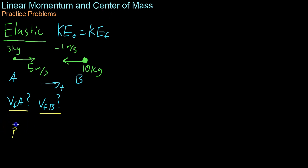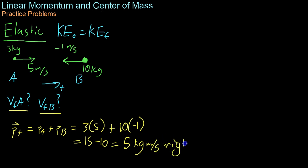So the total momentum of the system is just the combined momentums of A and B, or 3 kilograms times 5 meters per second for A plus 10 times negative 1, or 15 minus 10 equals 5 kilogram meters per second to the right. Now that we have that out of the way, what we can do is solve for the energy.